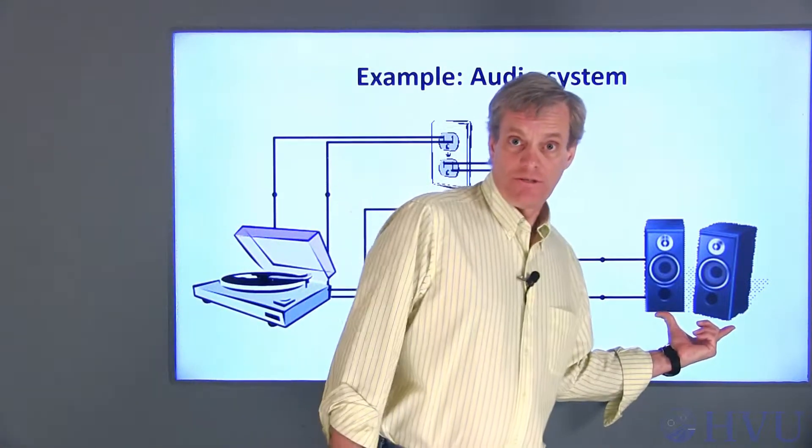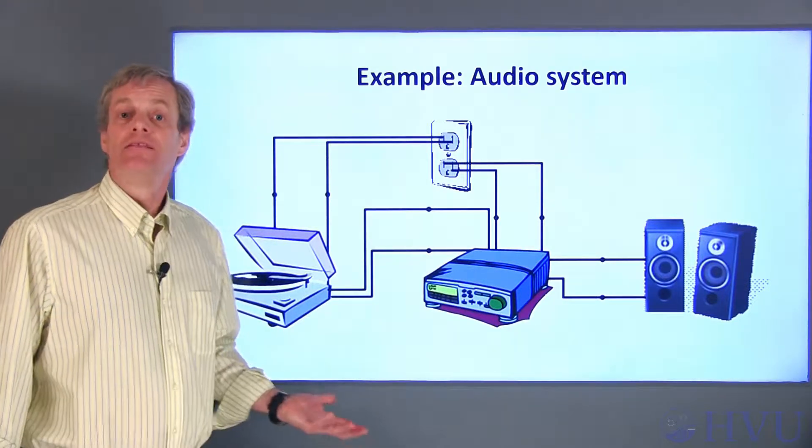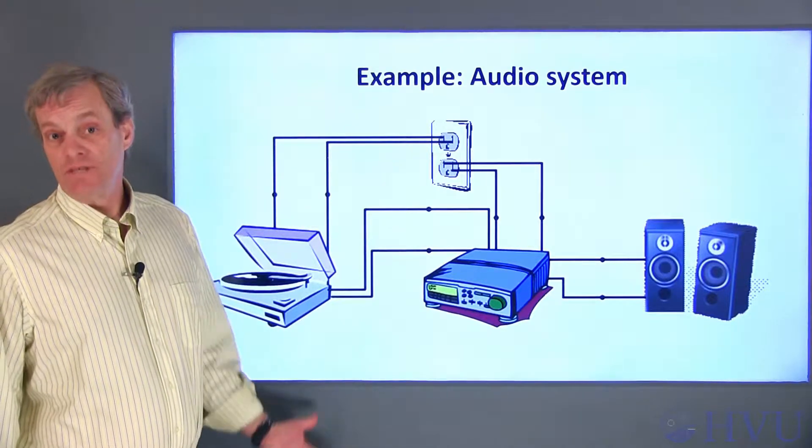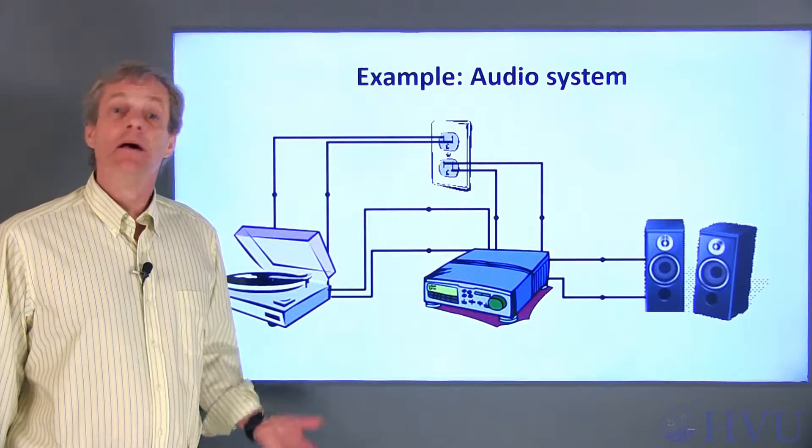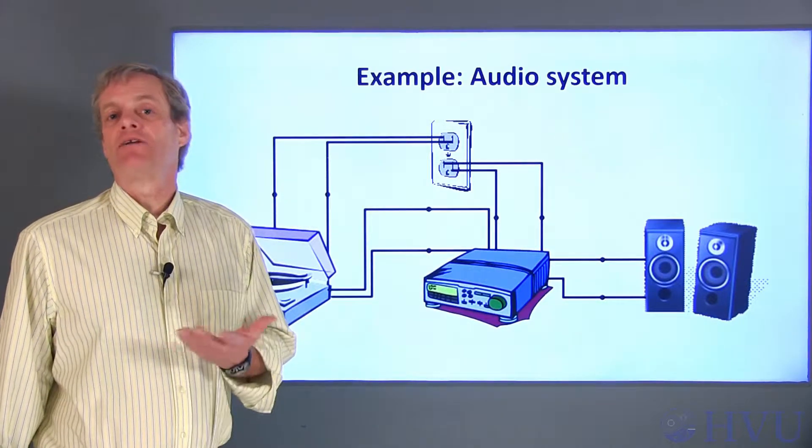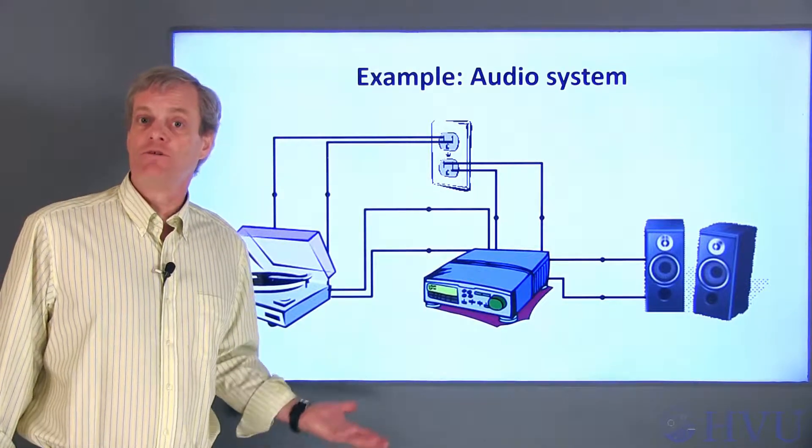The turntable has a needle which rides on the grooves of a record. The needle connects to a piezoelectric material which flexes when the needle passes over bumps in the record. Piezoelectric materials put out a voltage when they're flexed, so they can convert the needle's deflection to a voltage level.